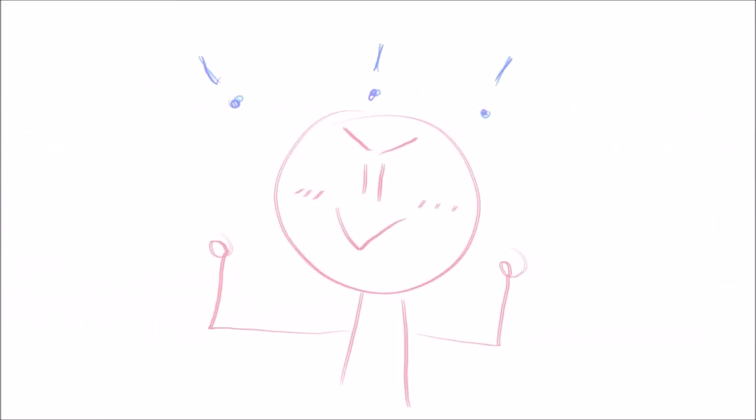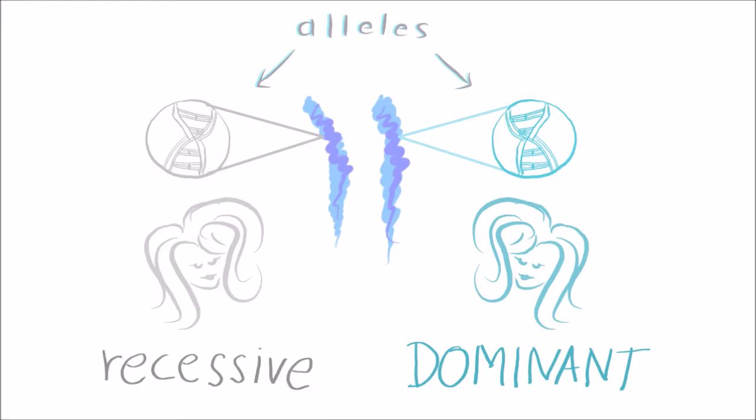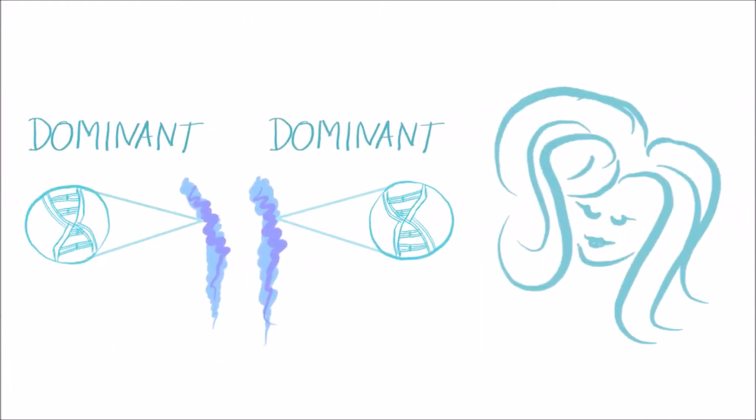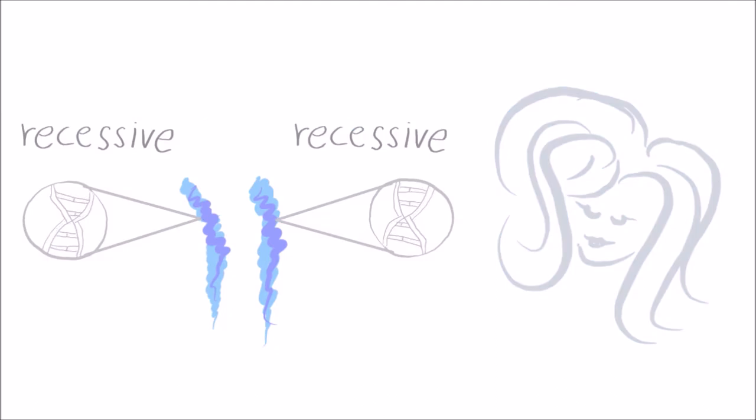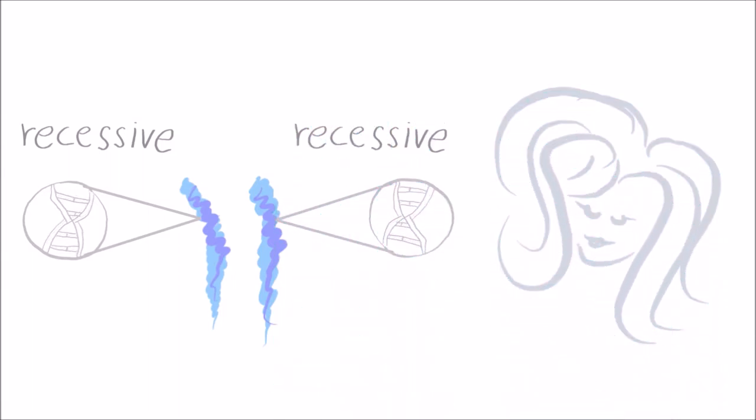Now we get to the interesting bit. Alleles can either be dominant or recessive. Dominant alleles are always expressed. Recessive alleles can only be expressed if the corresponding allele is also recessive. So there's no dominant allele to override the recessive trait.